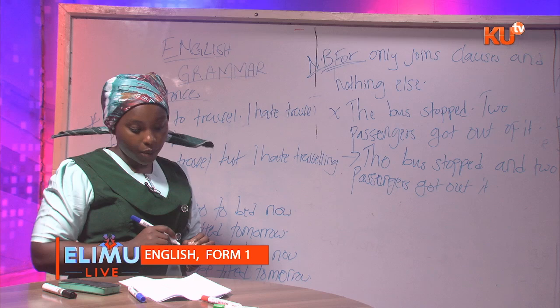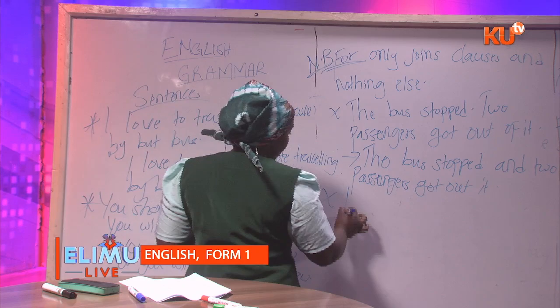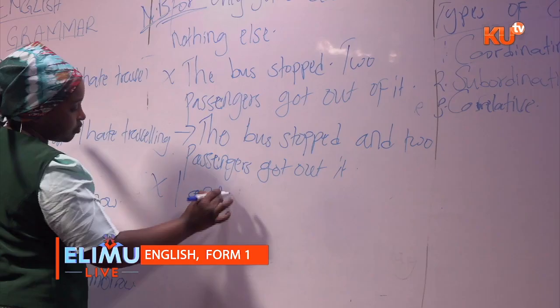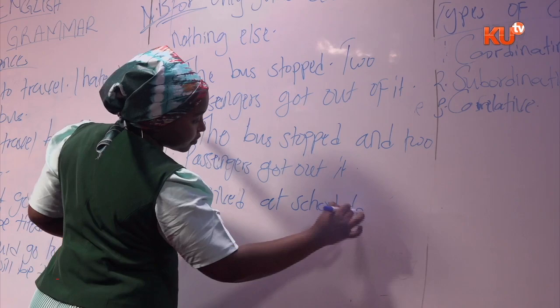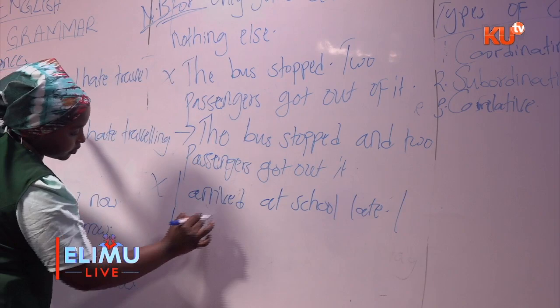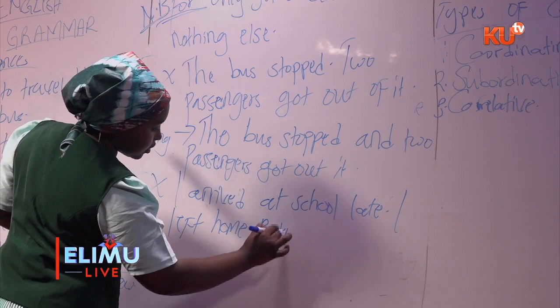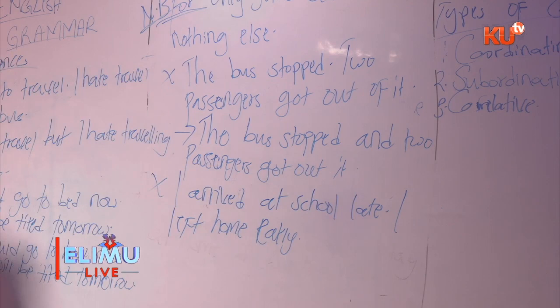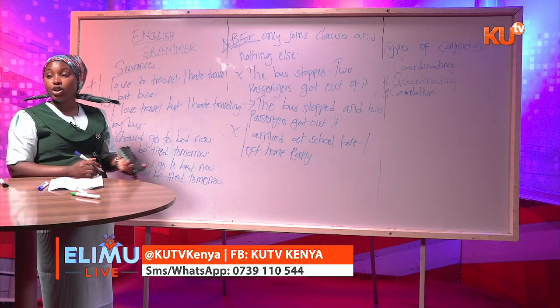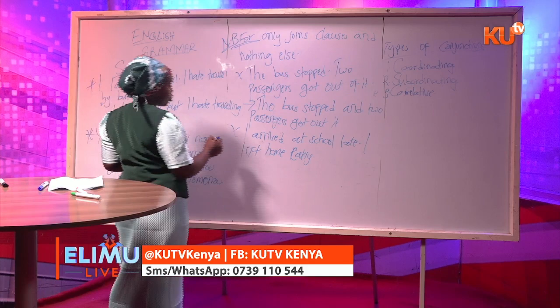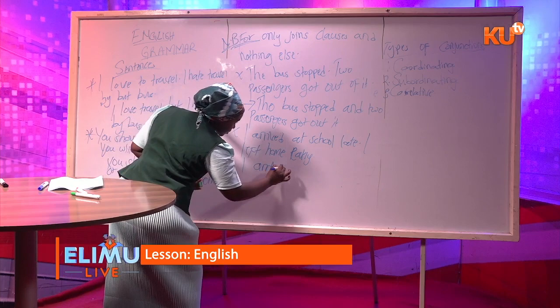Let's have the last example before going to subordinating conjunctions. 'I arrived at school late' and 'I left home early.' You can see there is a contrast — you don't expect someone who left home early to arrive at school late. So we use either 'but' or 'yet' to join these sentences.